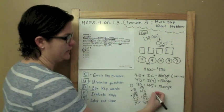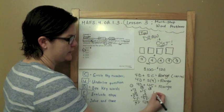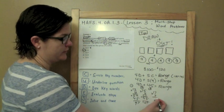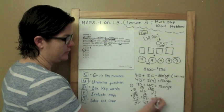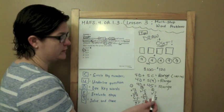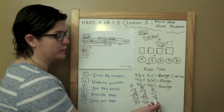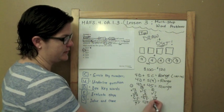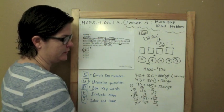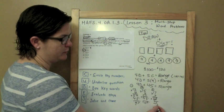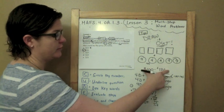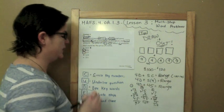Plugging in 17. 17 times 4, 7 times 4 is 28, 4 times 1 is 4 plus 2 is 6, that's 68, plus 45. 8 plus 5 is 13, and then 6 plus 4 is 10 plus 1 is 11. That's 113, does that fall within our range? Yes. So 17 is an answer.